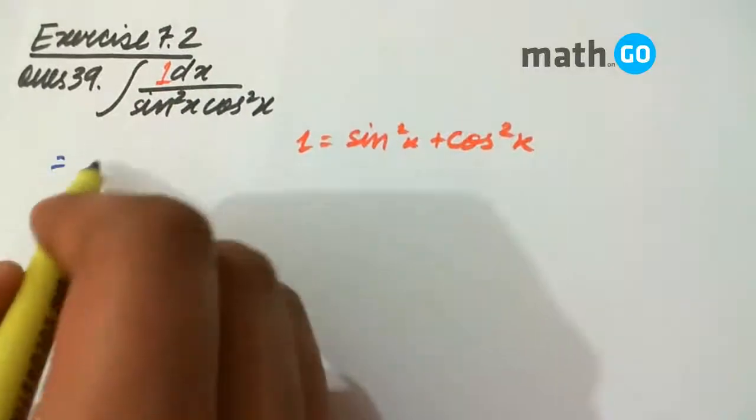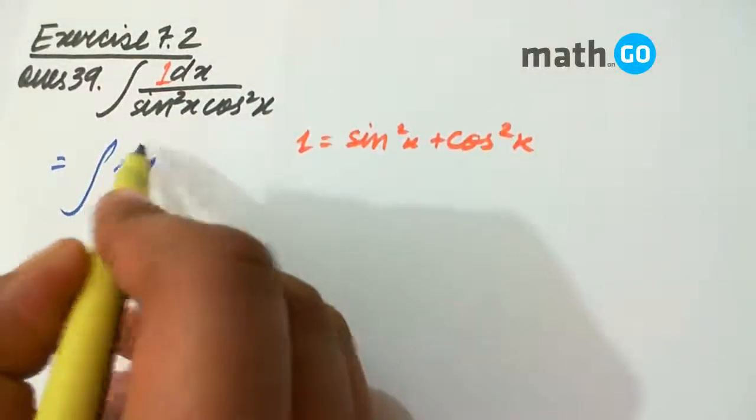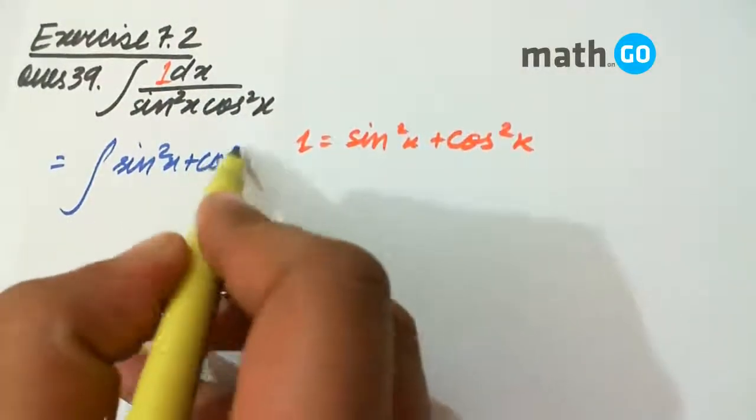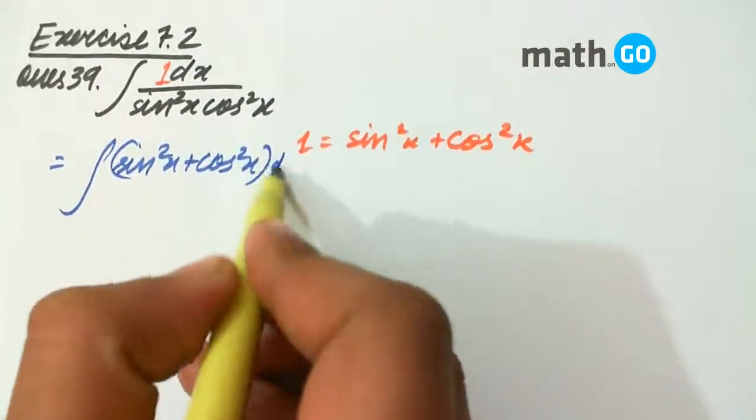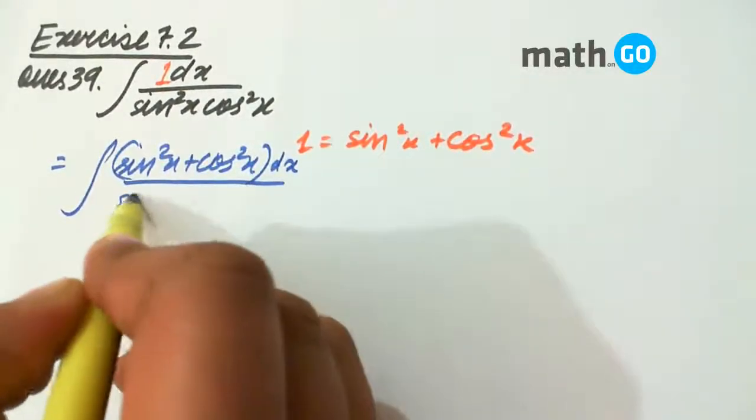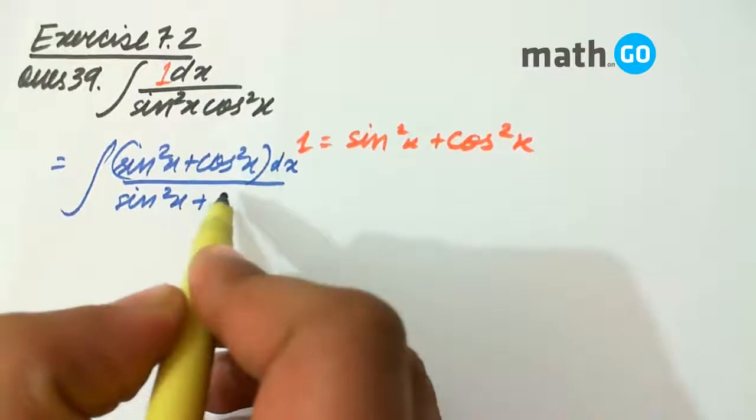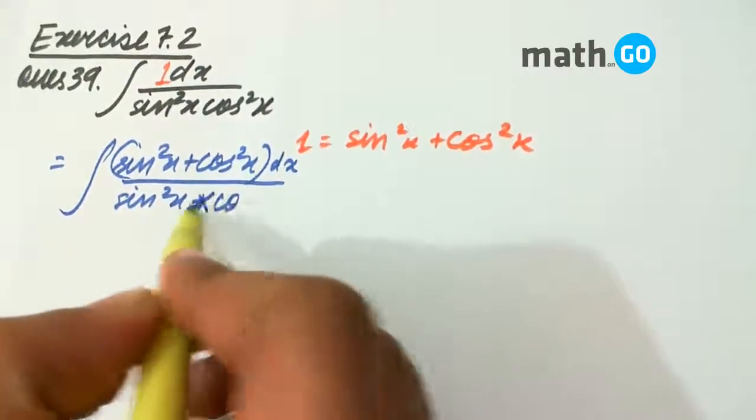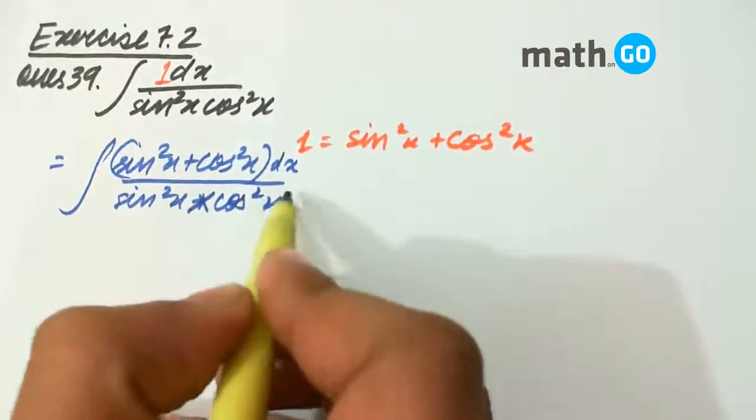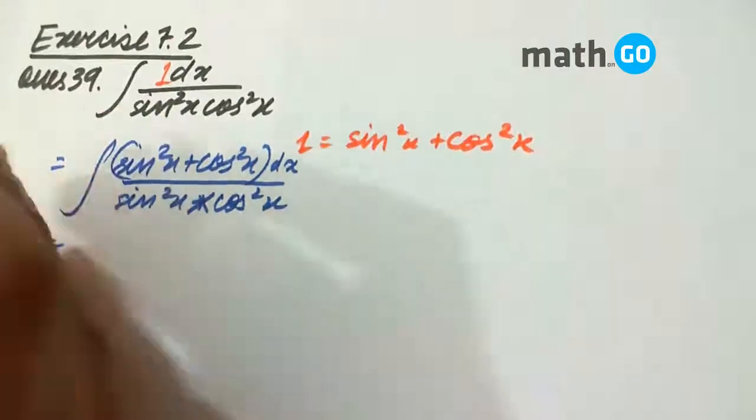Here we assume 1 and keep 1 equals to sin squared x plus cos squared x. If we keep this like this we will get sin squared x plus cos squared x into dx upon sin squared x into cos squared x.